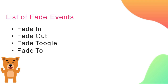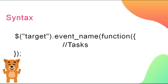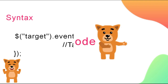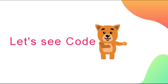To give the freeze effect, the fadeTo event is used. Here is the syntax: dollar sign, then the target element where we want to perform the event, dot event name for which event we need to perform, then a function, and between the curly brackets of the function we write our code — what we need to implement when the event is performed.